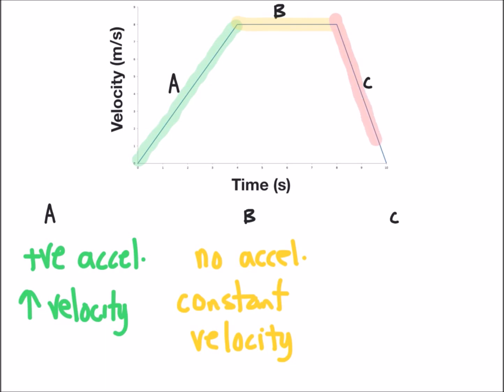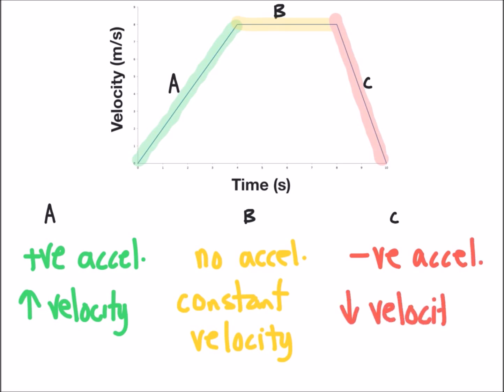Segment C is highlighted in red and there's an increase in time but there is a decrease in velocity. So with segment C what we can determine is there's a negative acceleration. The object is slowing down as a result of the decrease in velocity.